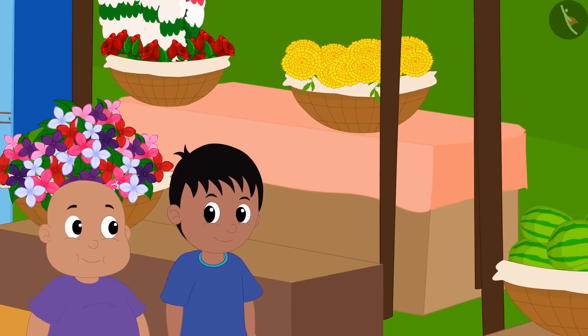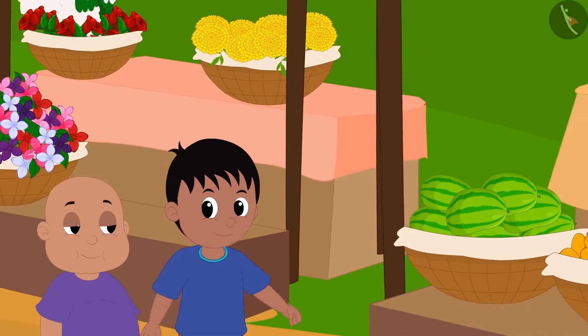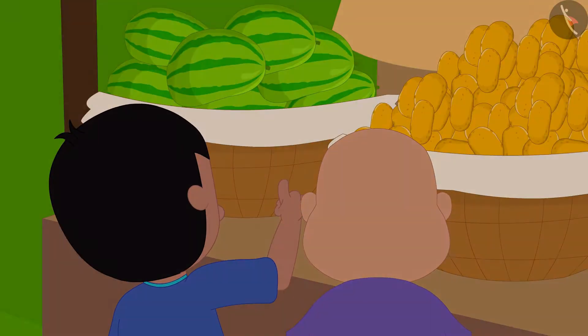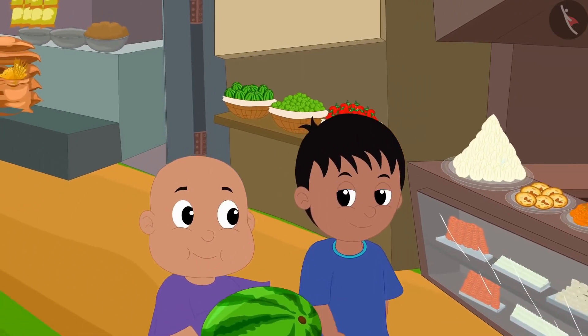Raju and Bablu are going to buy watermelon from the market. They bought a watermelon from Bunni's stall and took it to Raju's house.